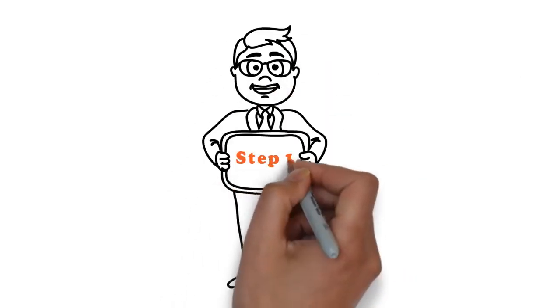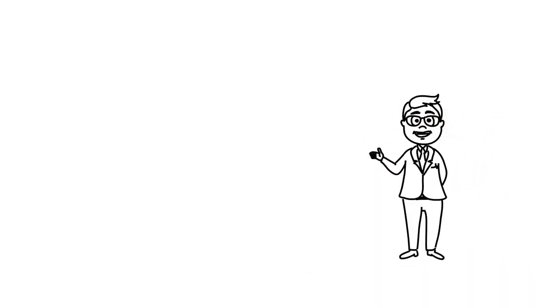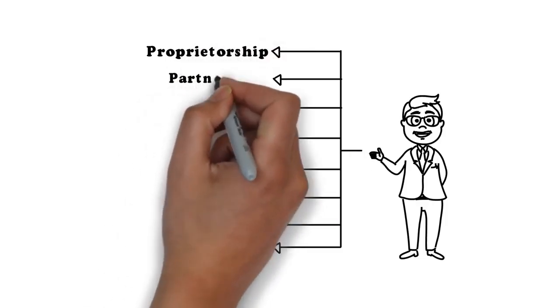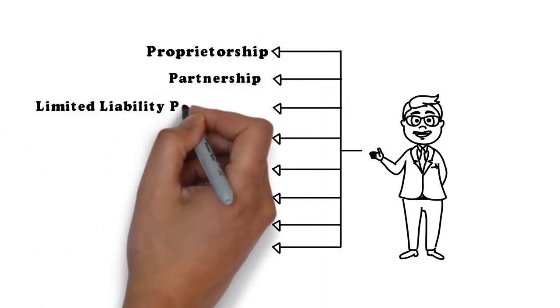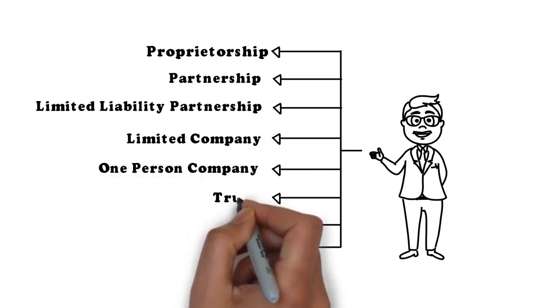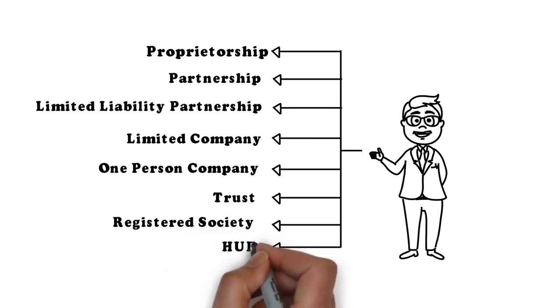Step 1. First, Nikku must choose the nature of her business entity, either Proprietorship, Partnership, Limited Liability Partnership, Limited Company, One Person Company, Trust, Registered Society, or HUF.